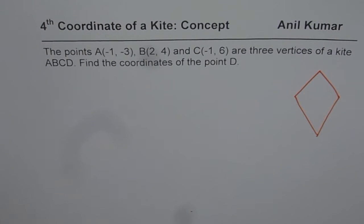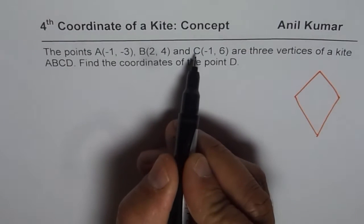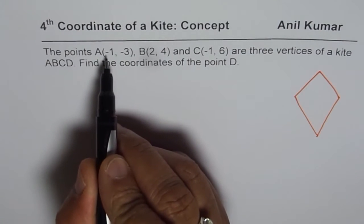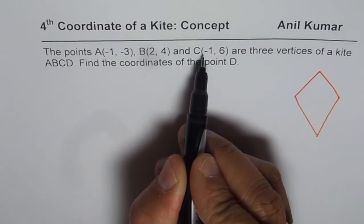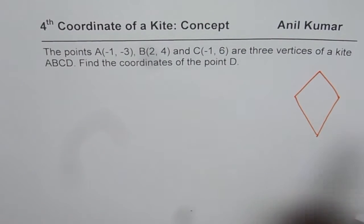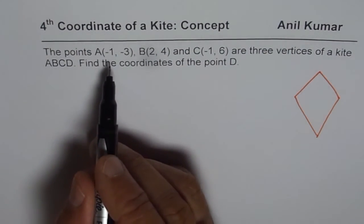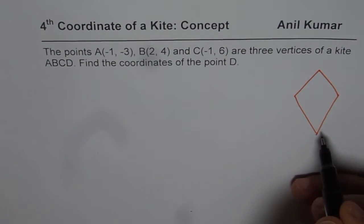So the diagram kind of is like this. The points are so selected as you can see here: A, B, C. A is (-1, -3) and C is also having the same x-coordinate, (-1, 6). So let me write down these points, and then we will see how they can be seen as points of a kite.